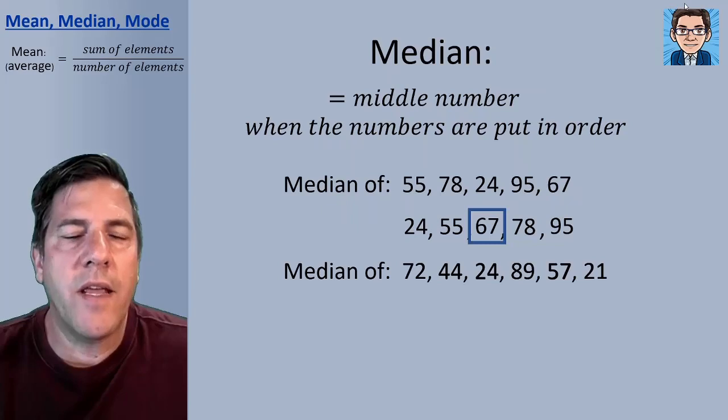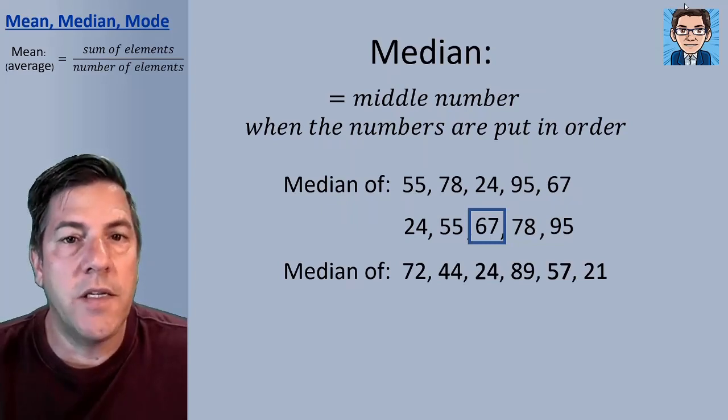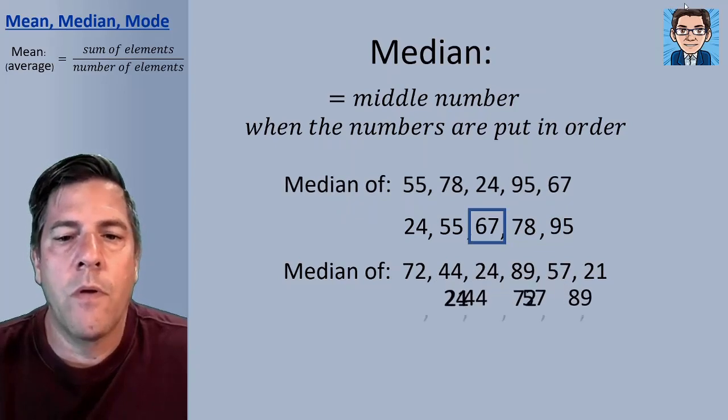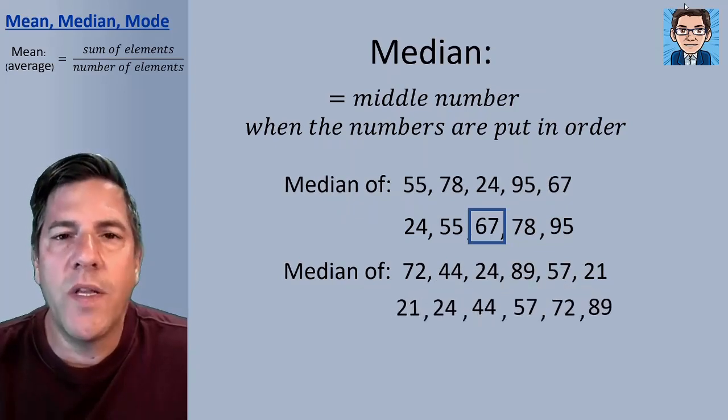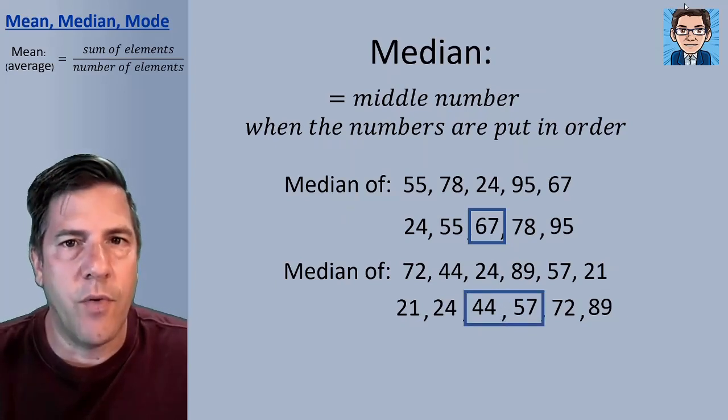Now, sometimes we're going to have an even number of elements. So if we were to take and rearrange these numbers and then look for the middle number, there is no one single number in the middle. We've got 44 and 57 both in the middle.